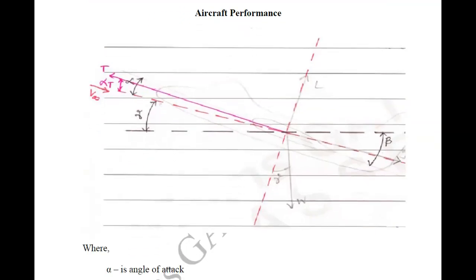There are four physical forces acting on the aircraft. First one is lift, which always acts perpendicular to your free-stream velocity direction. Second force is drag, which always acts parallel to your free-stream velocity, that is your flight path. Third force is thrust, which is always acting at the engine centerline at an angle alpha-t to the free-stream velocity direction — alpha-t is the thrust angle. Fourth one is weight, which acts perpendicularly downward to the horizontal axis, generally acting at the CG of your aircraft.